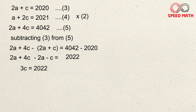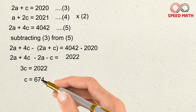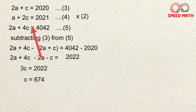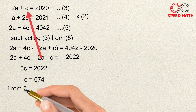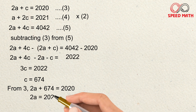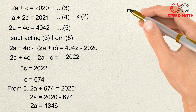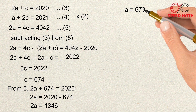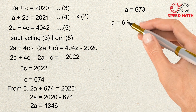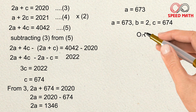So 3c = 2022, which gives c = 674. Substituting c = 674 into equation 3: 2a + 674 = 2020, so 2a = 1346, giving a = 673. So in Case 2 we have a = 673, b = 2, and c = 674.